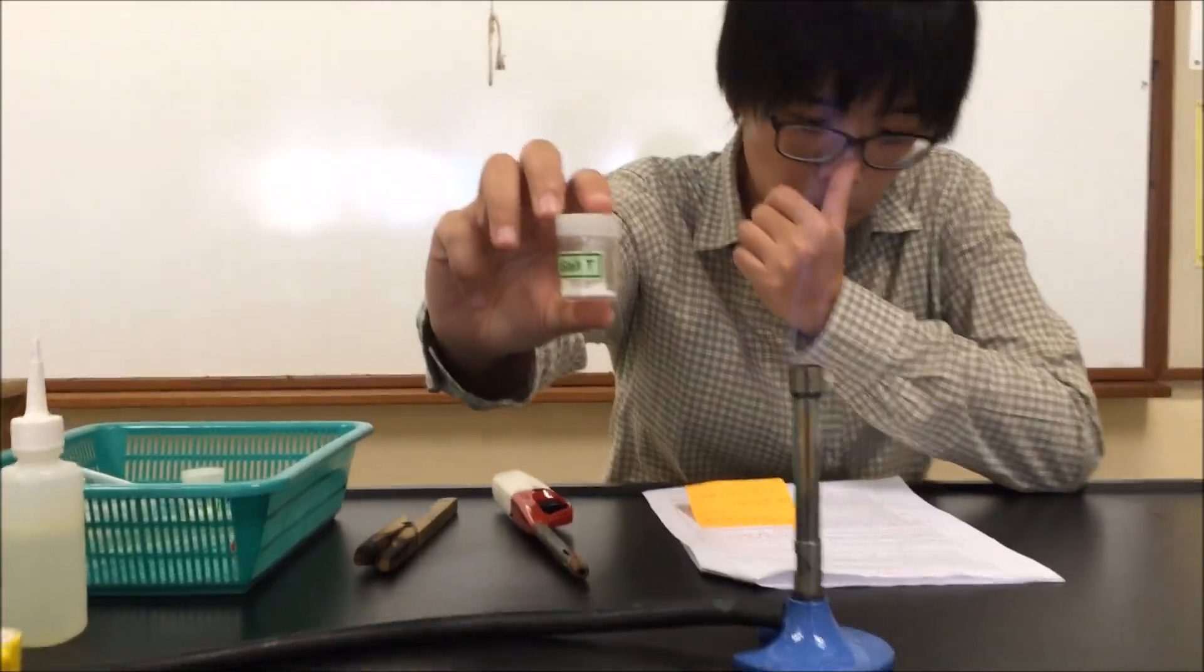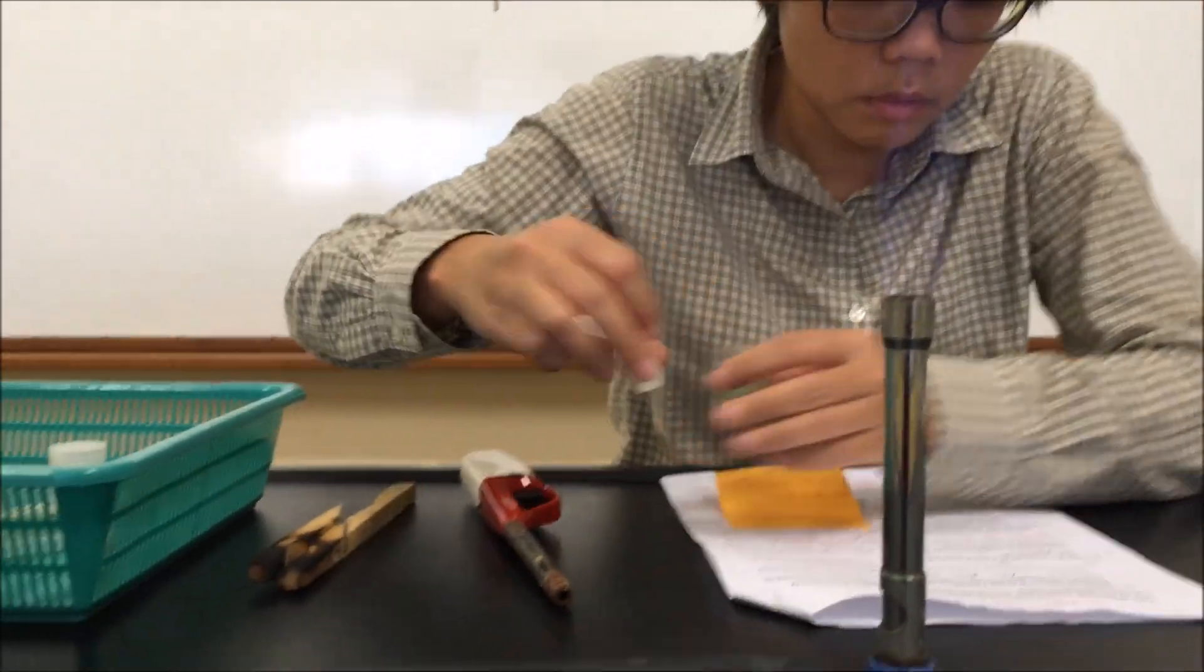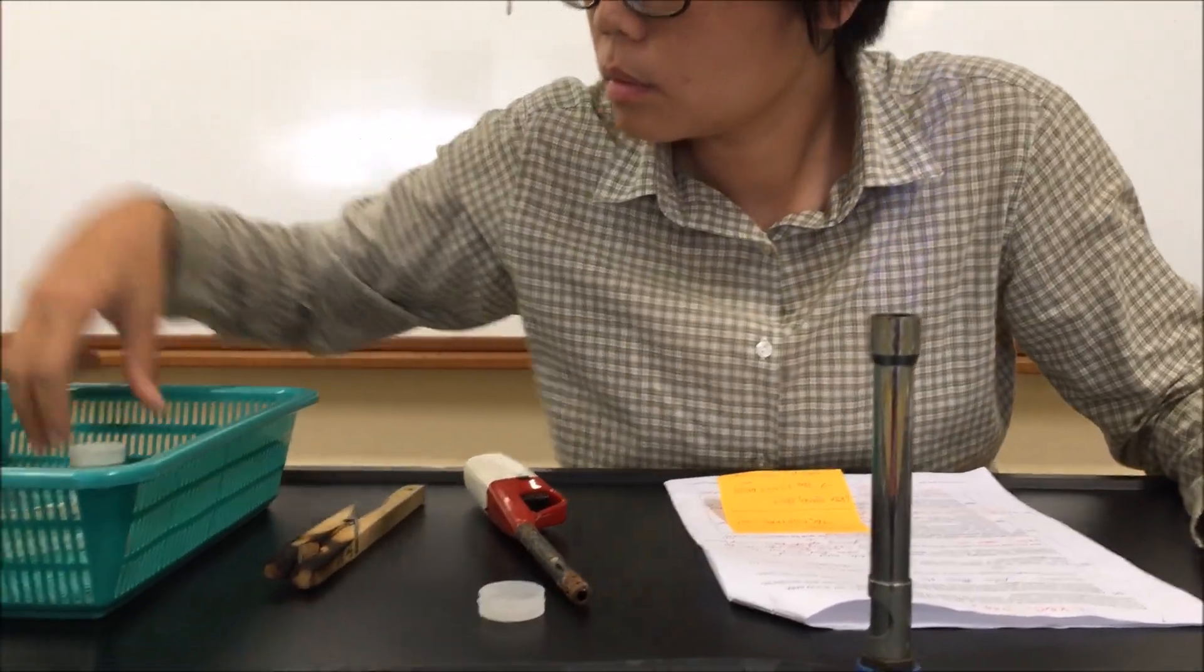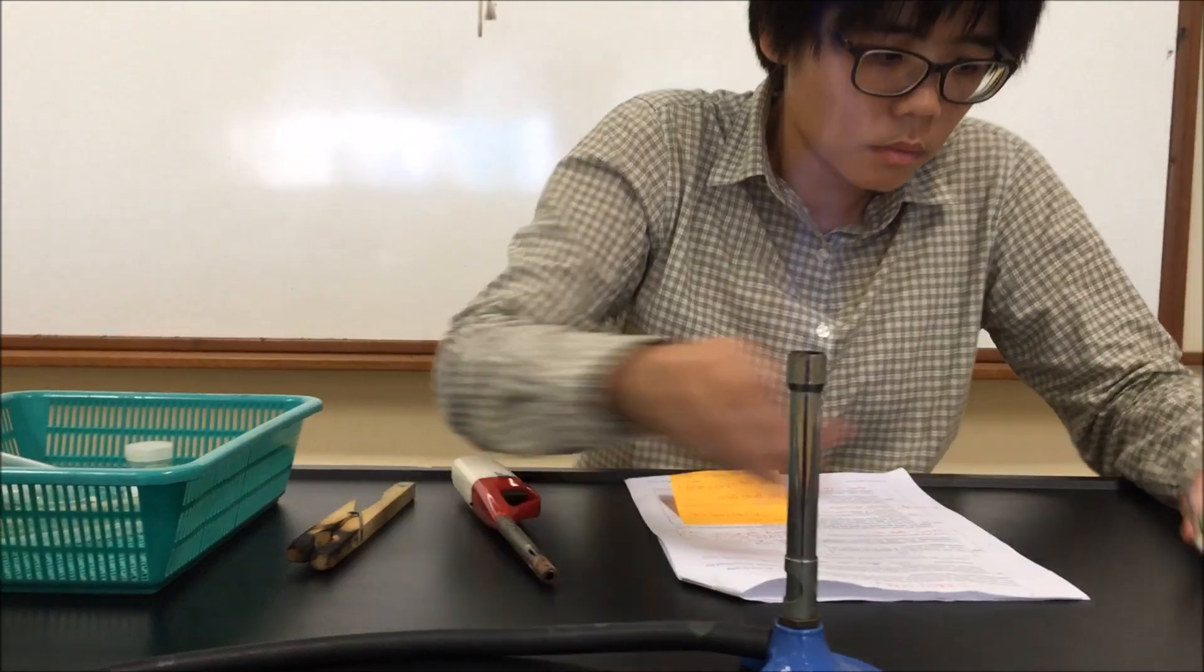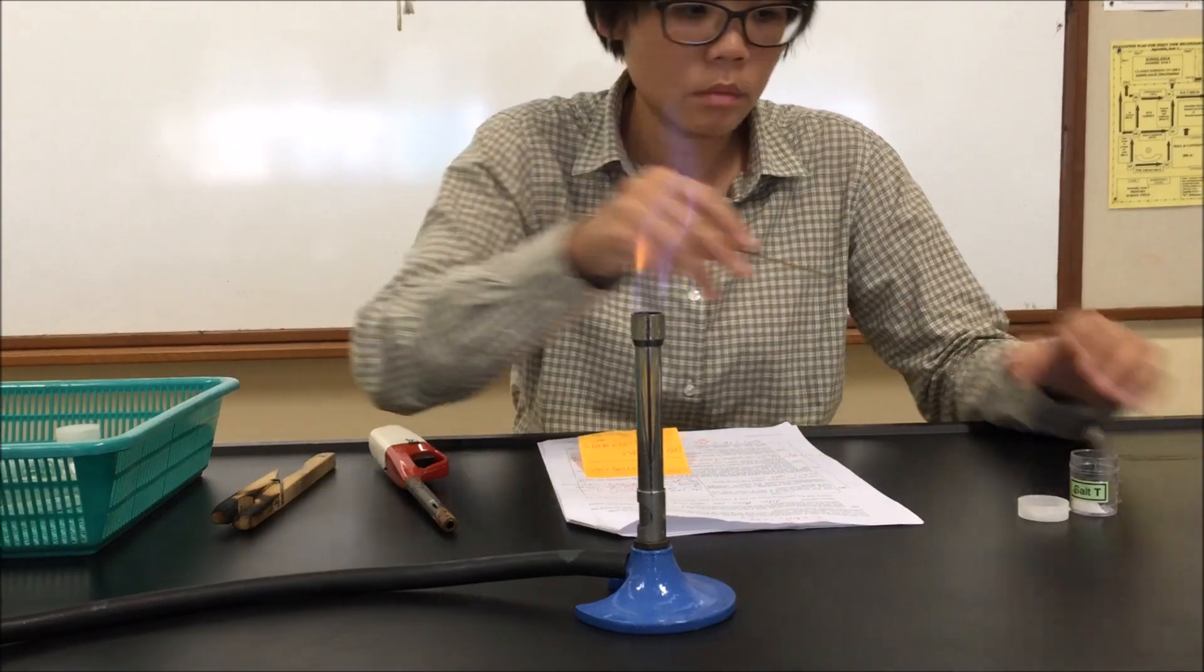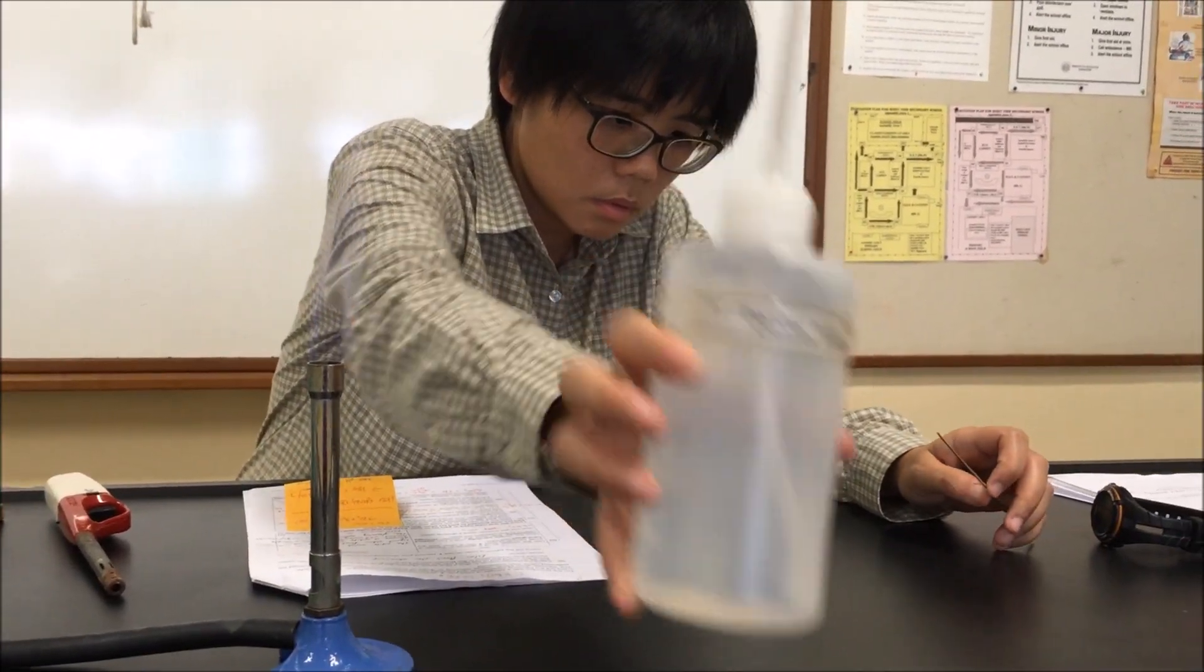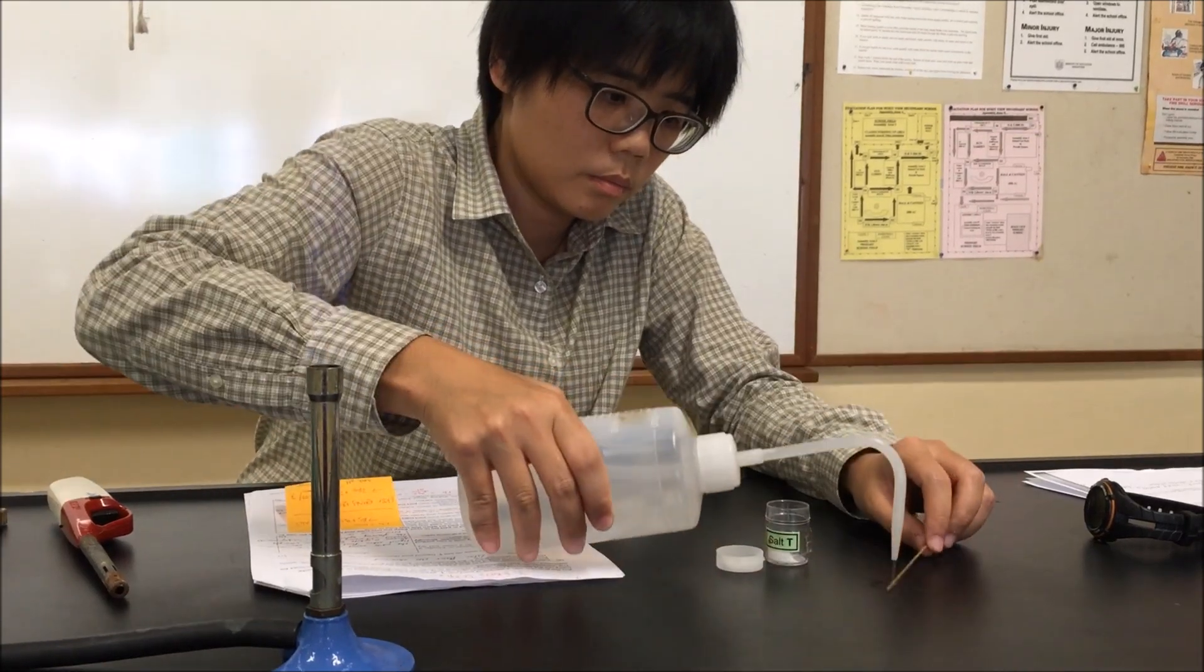To do the flame test, you need to take the solid salt T as a white solid. You need to pour out a little bit and then coat the splint with T. So you see that I pour it out onto the lid of the bottle so that I do not contaminate the bulk of my solid salt T.